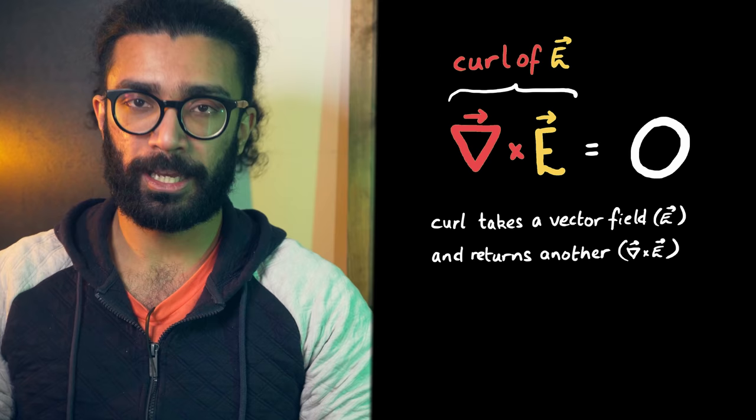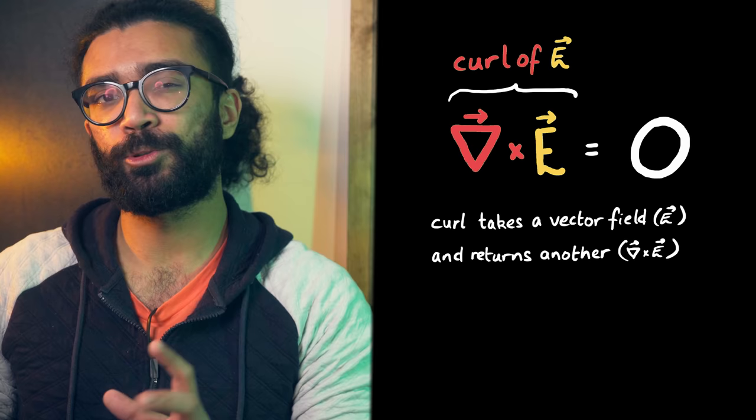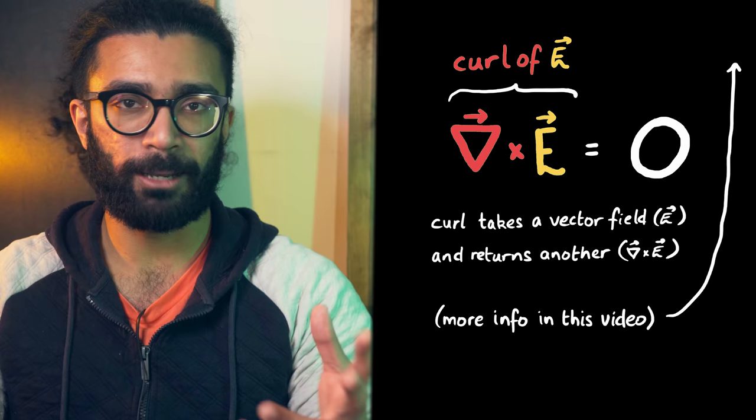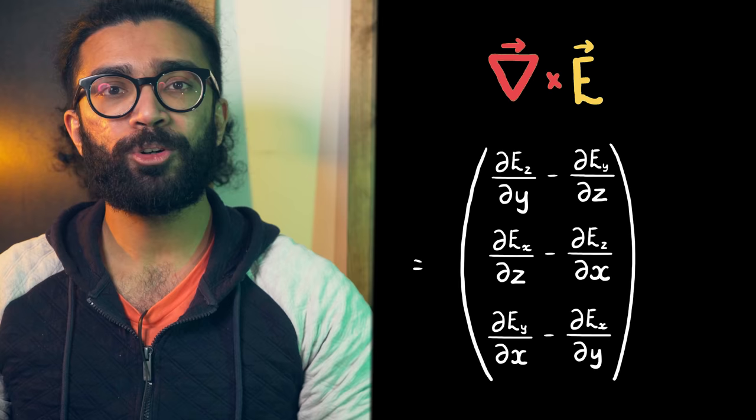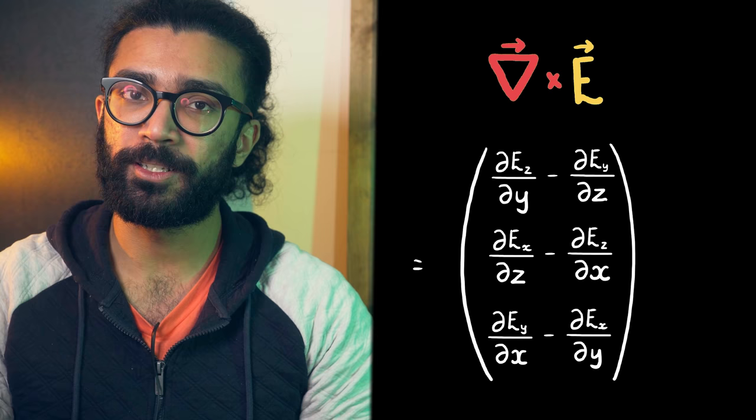Well, this operator, curl, takes a vector field, like the electric field, and returns another vector field, which is a measure of how rotational the field is. So that's a kind of hand wavy definition. I discuss it in much more detail in this video up here about the Nabla operator. For our purposes, though, all we care about is that the curl of the electric field has this mathematical form. These terms look at how quickly components of the electric field change in a particular direction, so this time not changing over time, but rather how quickly they change in a particular direction.